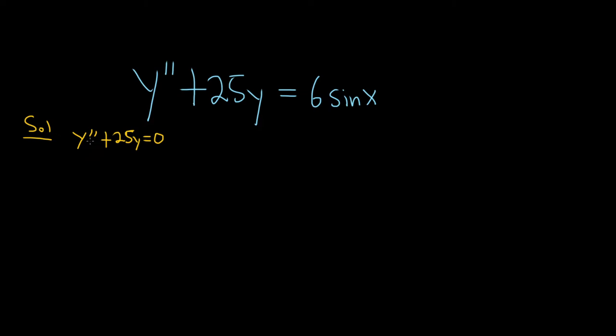You just match the powers: this is the second derivative so it's m squared, and then here it's just 25 — whenever there's a y you just put the number down — so we get zero. To solve this we'll subtract the 25, so m squared equals negative 25, then take the square root of both sides and get m equals plus or minus 5i.